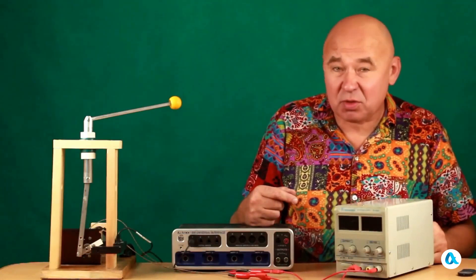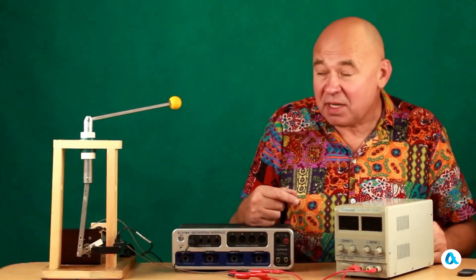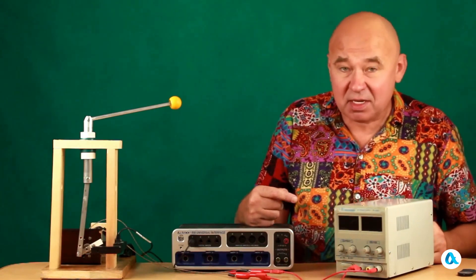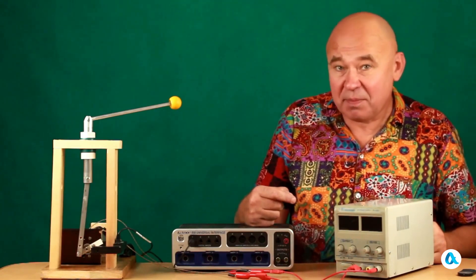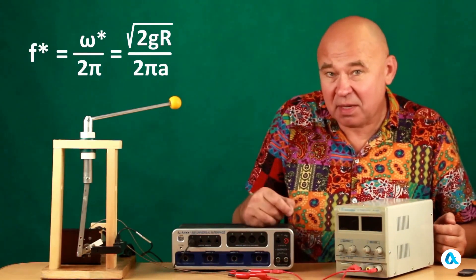And now I know the critical frequency above which the shaft of the electric motor must rotate for the Kapitza pendulum in this setup to remain in a vertical position. It is equal to the square root of 2gr divided by 2πa.